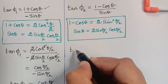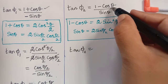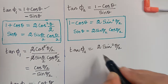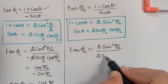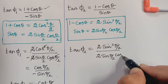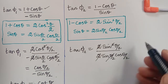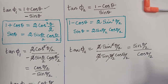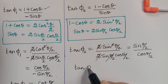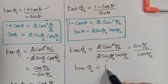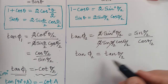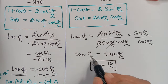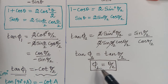Substituting: tan(phi2) = 2sin²(theta/2) / (2sin(theta/2)cos(theta/2)). The 2's cancel and one sin(theta/2) cancels, leaving sin(theta/2)/cos(theta/2) = tan(theta/2). Therefore tan(phi2) = tan(theta/2), which gives phi2 = theta/2.